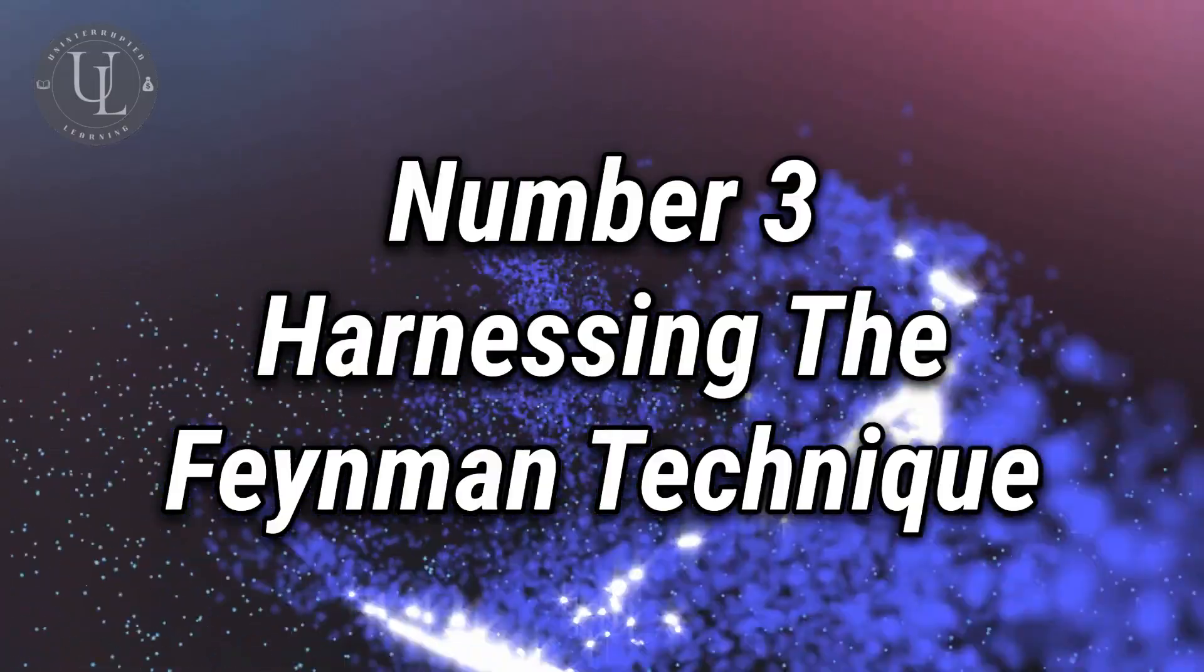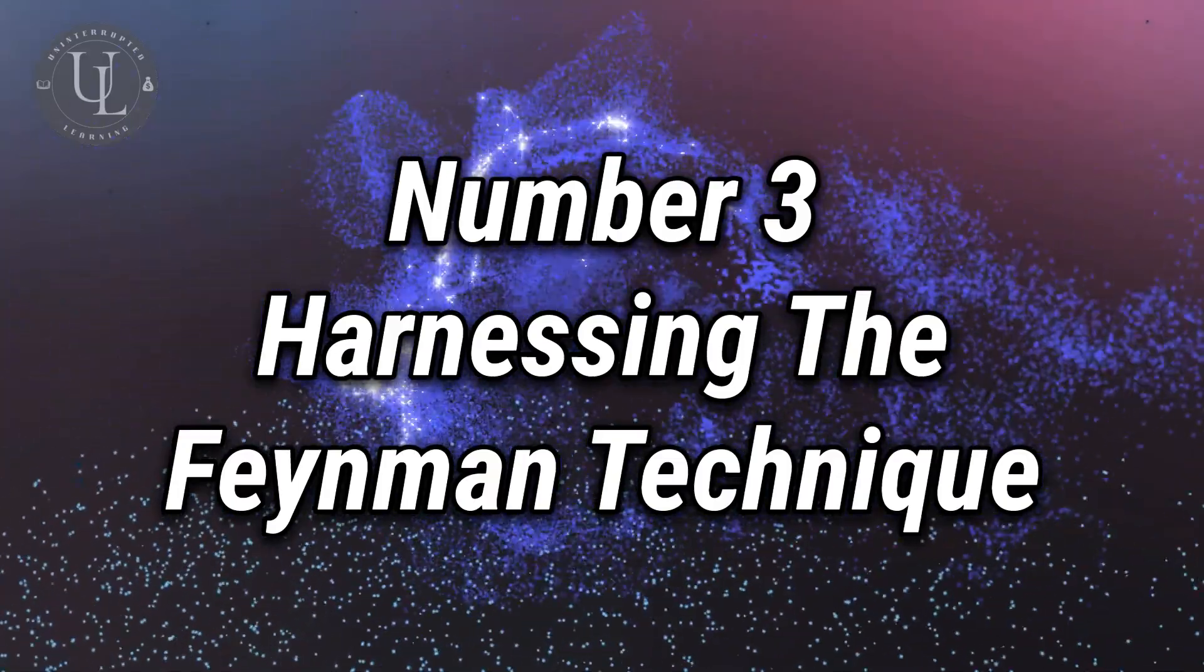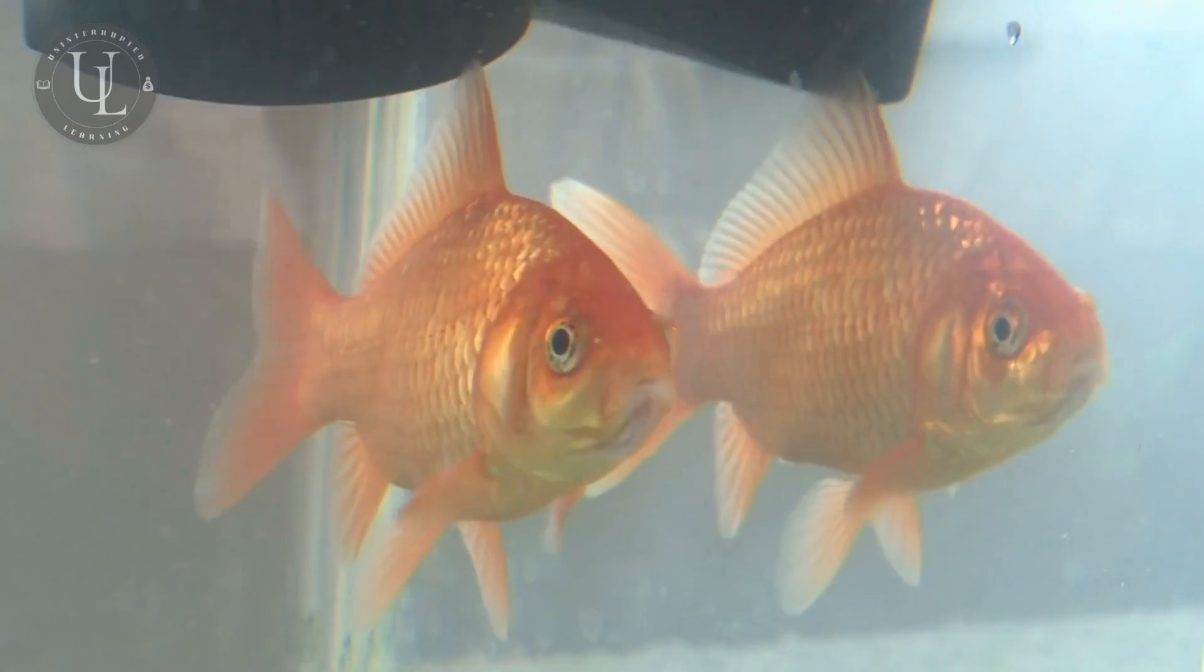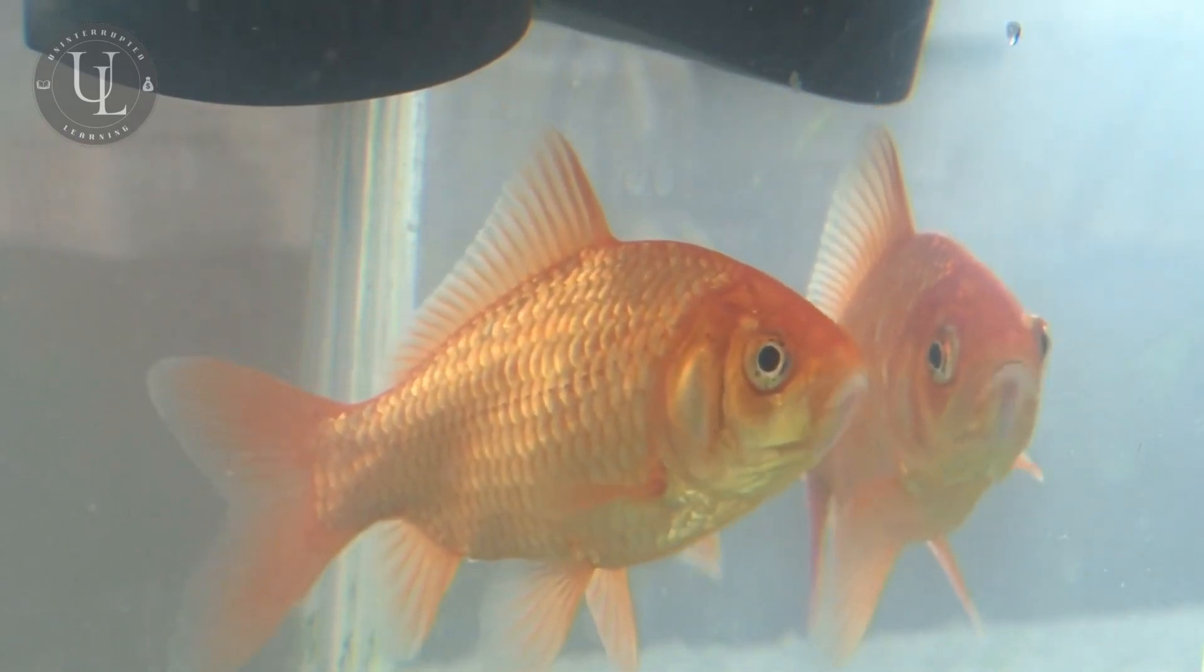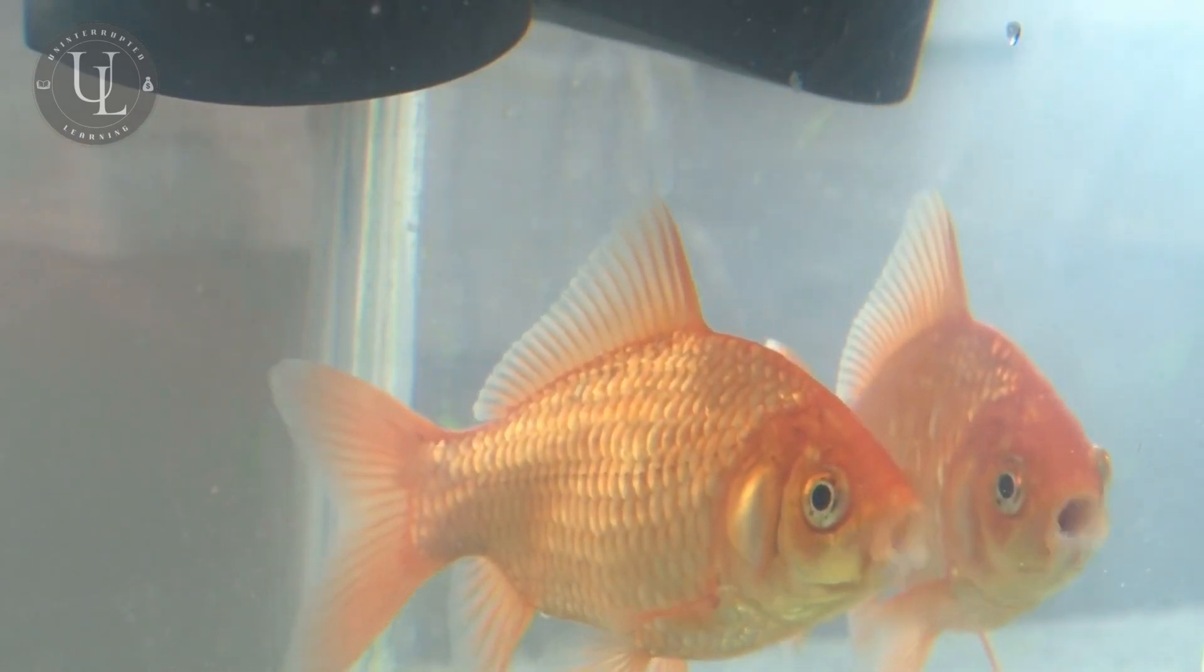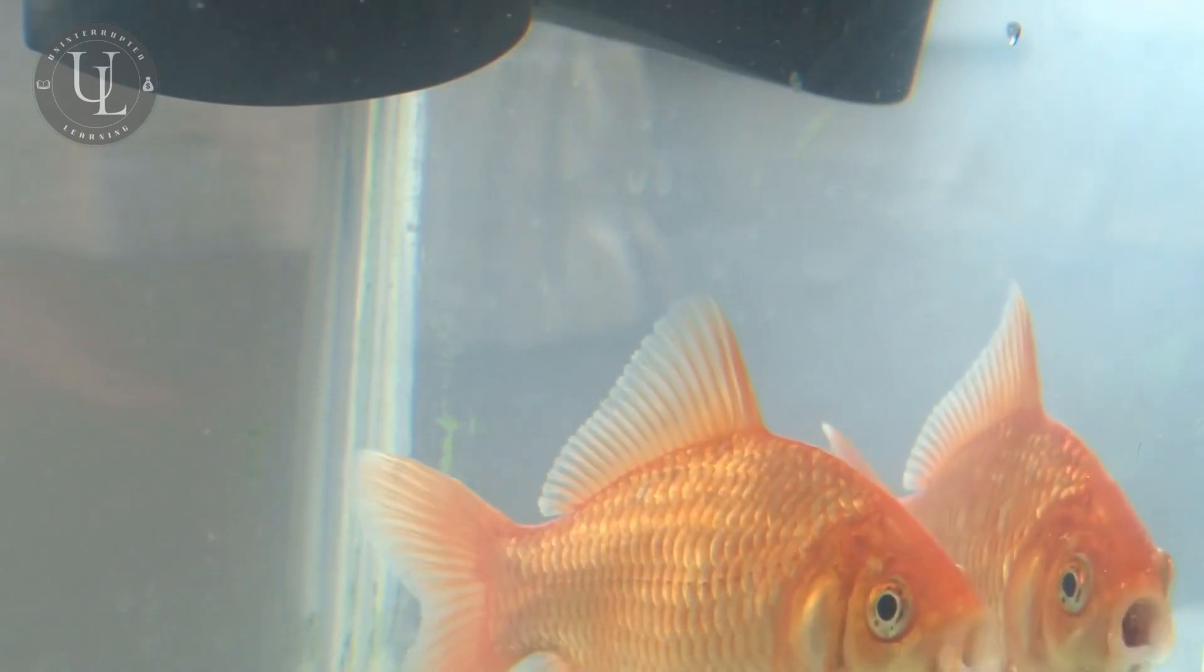Number three, harnessing the Feynman technique. Here's the scoop. The Feynman technique, named after the brilliant physicist Richard Feynman, is all about breaking down complex ideas into bite-sized, understandable nuggets of wisdom. How? By explaining them in plain, simple language that even a goldfish could comprehend. Well, maybe not a goldfish, but you get the idea.